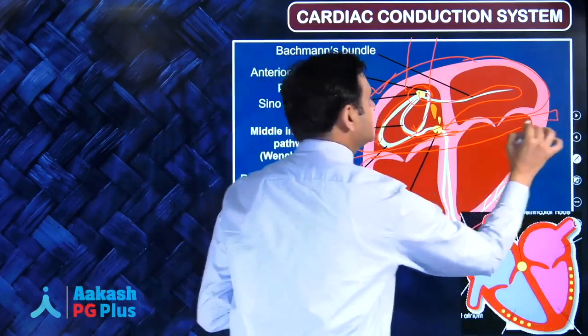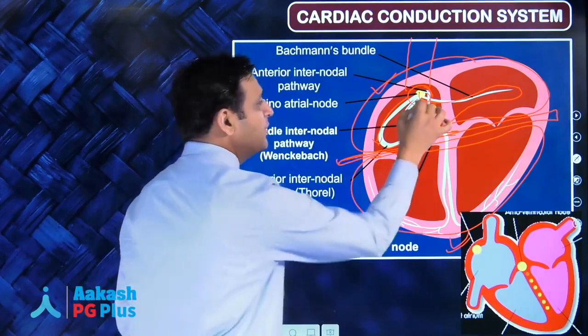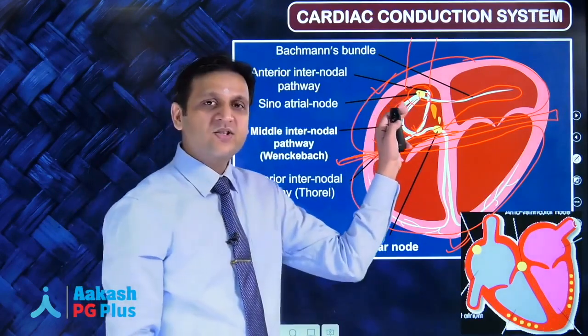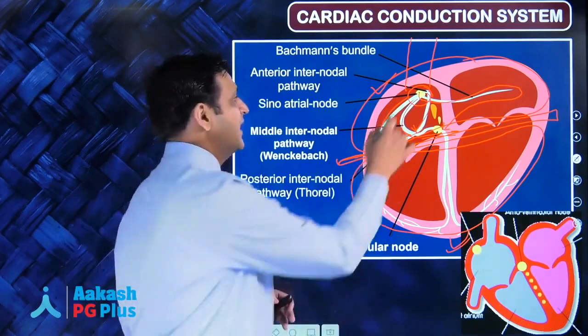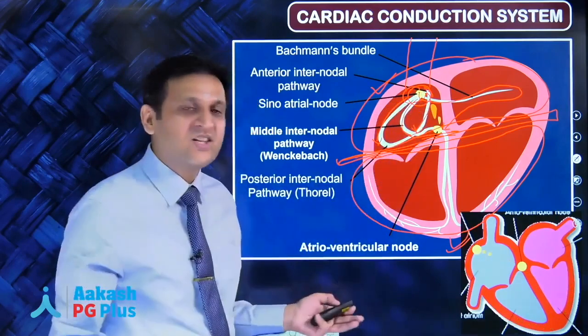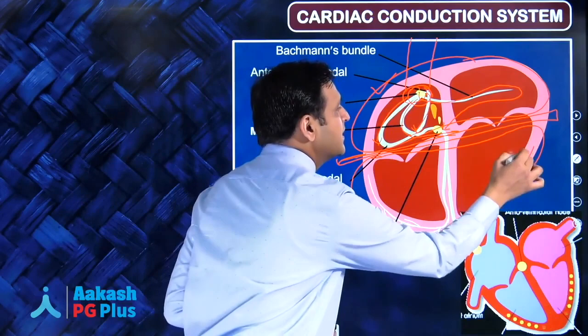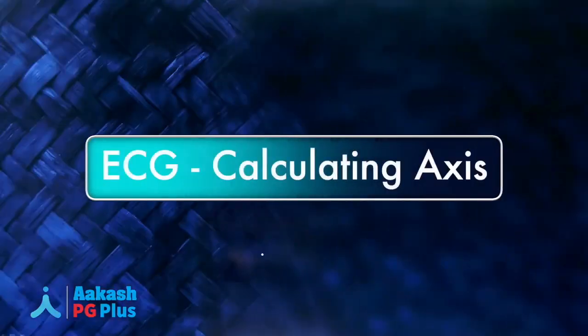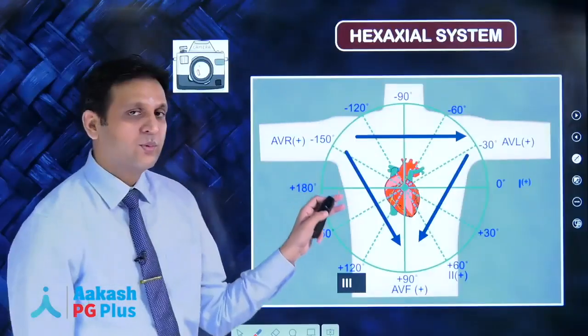The atria and ventricle are separated by a fibrous tissue. The cardiac conduction system has an origin, the SA node, and has a destination, the Purkinje fibers percolating into the myocardium.